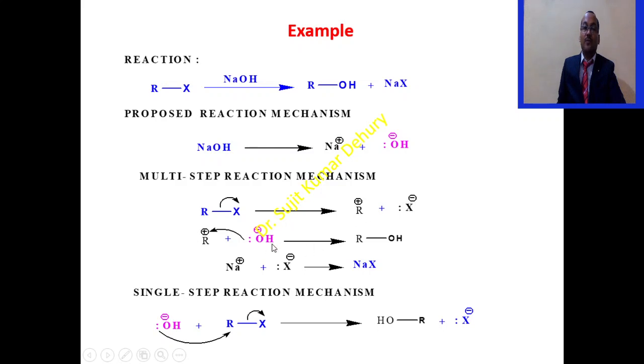This gives rise to X minus with both the electrons and R plus. We have in the reaction medium OH minus ion. So nucleophile will attack, the lone pair of OH minus ion will attack the electrophile R plus, giving rise to the product ROH. And in reaction medium we have Na plus and X minus that leads to NaX.